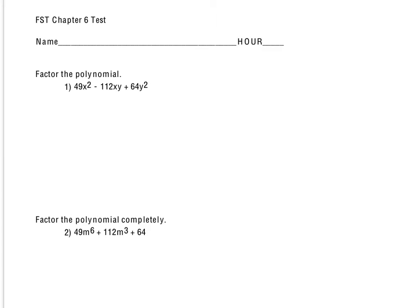So here we're looking at our chapter 6 test for FST with the different factoring methods. Starting with number 1, it certainly looks like it is that perfect square trinomial pattern, which of course looks like this. And so what we want to look for is to see if I square root the first term, I get 7x.